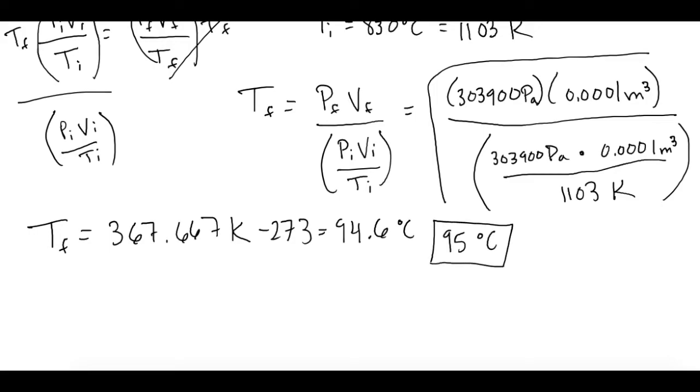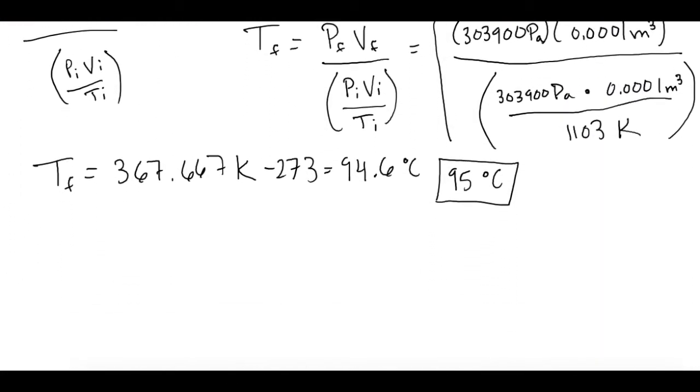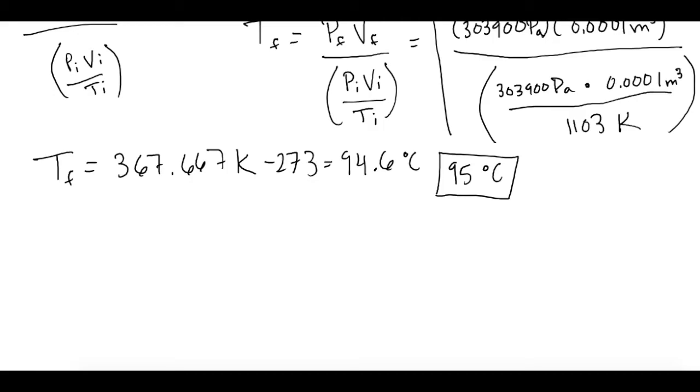Then they ask us one more thing. They say, how many moles of gas are there? Well, now that we have our final temperature, we can solve for it. So we'll use PV equals nRT. Solving for n, we'll divide both sides by RT. So n or number of moles is equal to pressure and volume over gas constant times temperature.